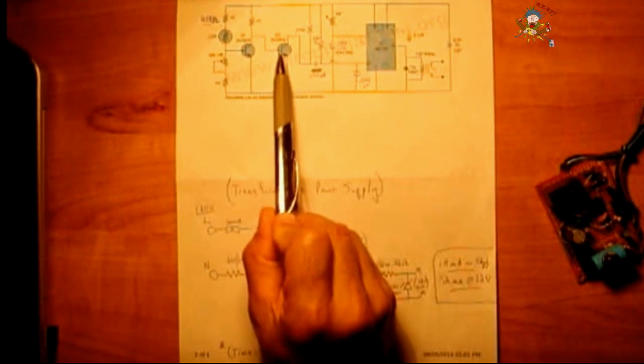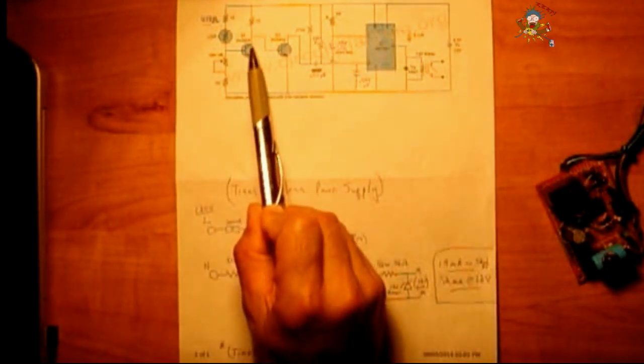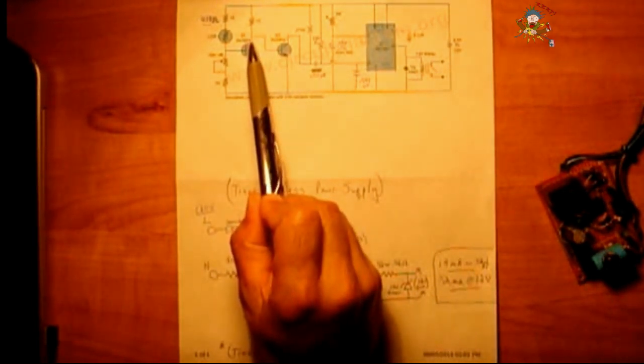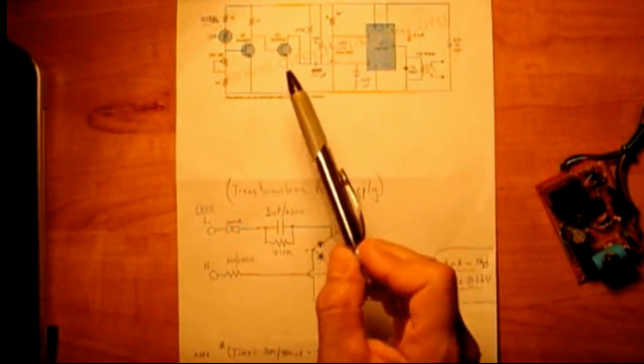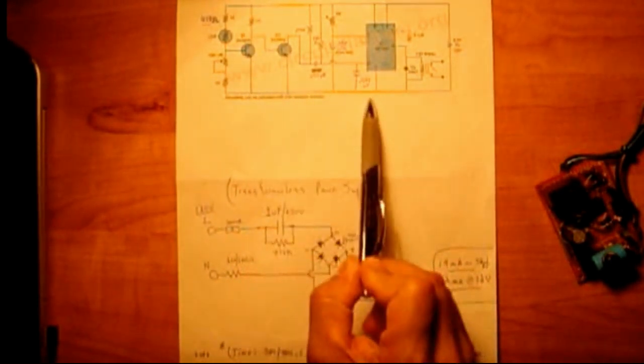That goes into this transistor and you have the base going into the collector of this one. From that point here, where the collector is, is a 1k to the top rail. Both the emitters down to the negative rail.